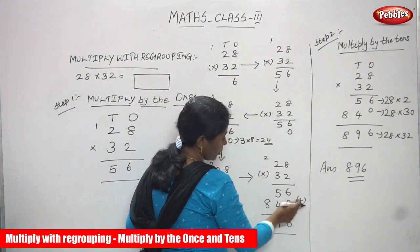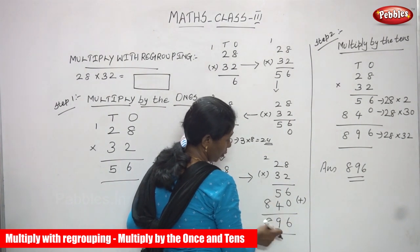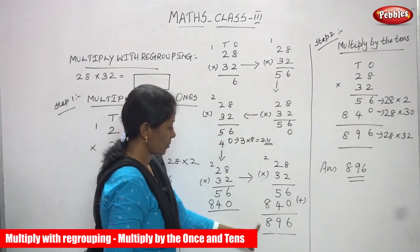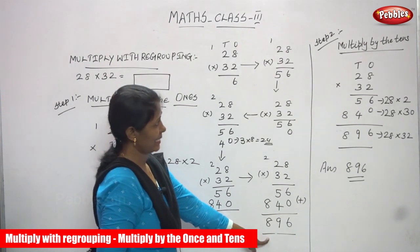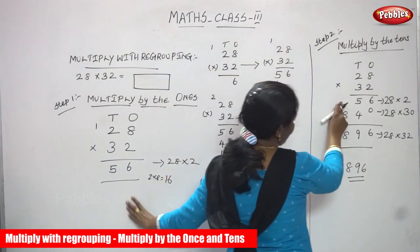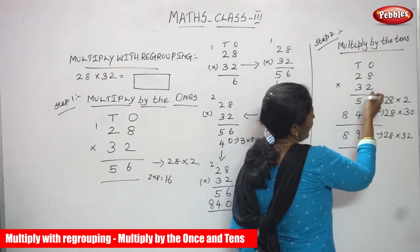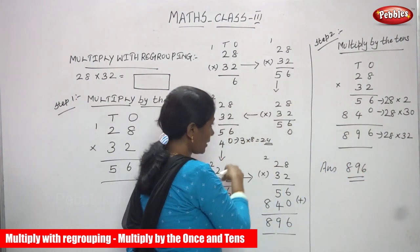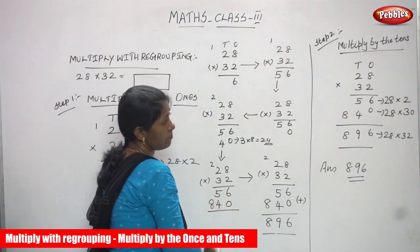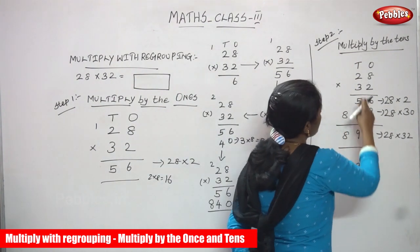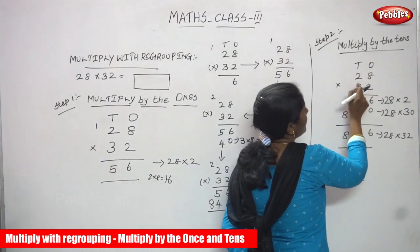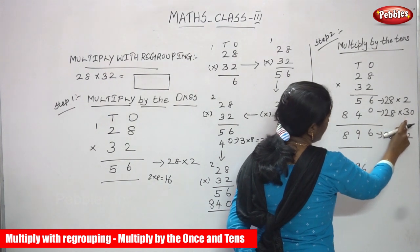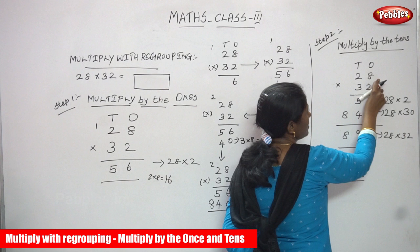Now you are going to add both numbers. 6 plus 0 is 6; 5 plus 4 is 9 — because 5 in the mind and 4 on the finger: after 5, count 6, 7, 8, 9. And 8 you bring down as it is. So the answer is 896. Multiplying by the ones gave 56; multiplying by the tens gave 840.